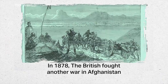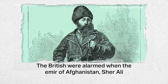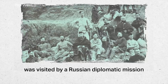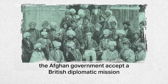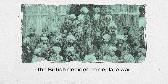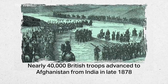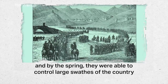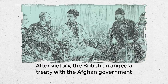In 1878, the British fought another war in Afghanistan out of fear of Russian interference. The British were alarmed when the Emir of Afghanistan, Shere Ali, was visited by a Russian diplomatic mission. They demanded that the Afghan government accept a British diplomatic mission and, when they refused, the British decided to declare war. Nearly 40,000 British troops advanced to Afghanistan from India in late 1878, and by the spring they were able to control large swathes of the country. After victory, the British arranged a treaty with the Afghan government.